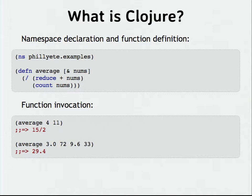Starting with an ampersand, that means it takes a variable number of arguments — I can pass any number of arguments to this function. And then the body of the function. Generally when we're looking at Lisp code, we think about evaluating it from the inside out. So I start from the inside, left to right. I see 'reduce plus nums' — that means I'm going to take the collection of numbers passed to this function and reduce them using another function: apply plus to the first two numbers, then take the result, add the next number, and so on. Eventually that gives me the sum. Then I take the count of how many numbers I have, and that slash is the division function, so this is prefix notation in arithmetic. I divide the sum by the count, and that gives me an average.